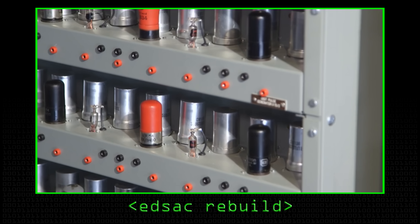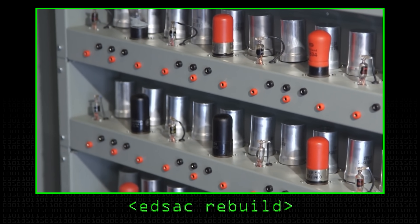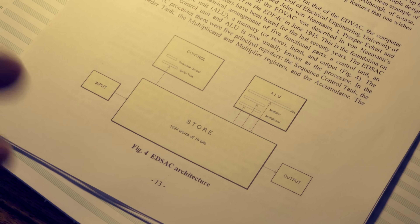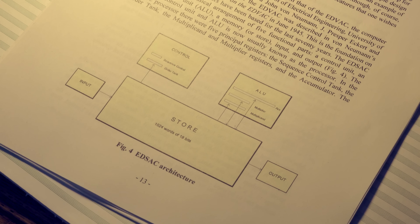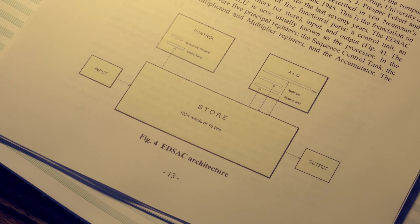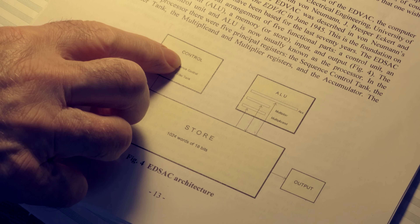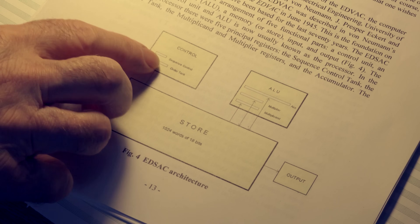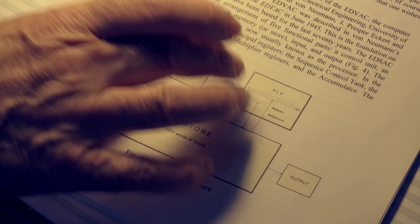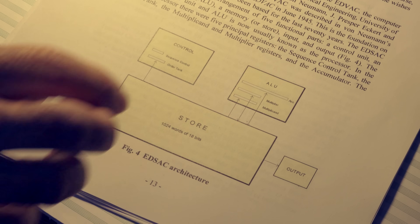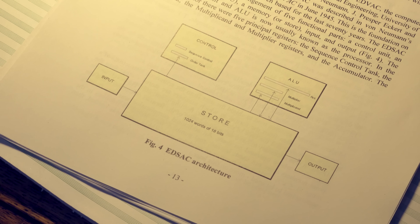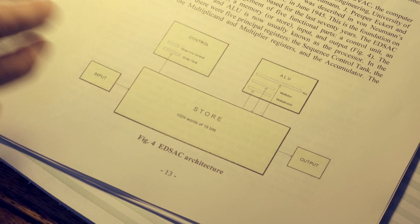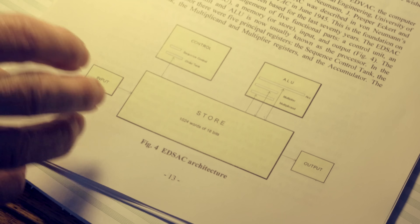We've mentioned EDSAC before and it is a von Neumann machine. It's very simple: to build a computer you need a store, or memory as it's more commonly called nowadays, to hold your instructions and your data. You need a control unit, often called a CPU. You need an arithmetic capability — the ALU, the arithmetic and logic unit — which in modern chips is often combined into what we just call the CPU chip. And you need input devices of various sorts, input/output devices for backup storage, disks and so on.